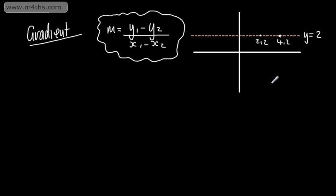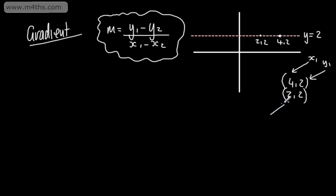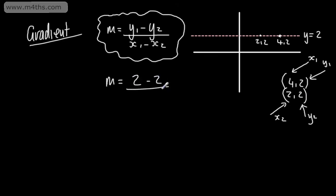I can choose which points I want. So for example, with (2, 2) and (4, 2), I can say that x1 is 2 and y1 is 2 — I need to keep consistent. Therefore x2 is 4 and y2 is 2. So the gradient, the change in y over the change in x, is y1 minus y2 which is 2 minus 2, over x1 minus x2 which is 4 minus 2. The numerator gives us 0, therefore the gradient is 0. There's no change in the y coordinate.